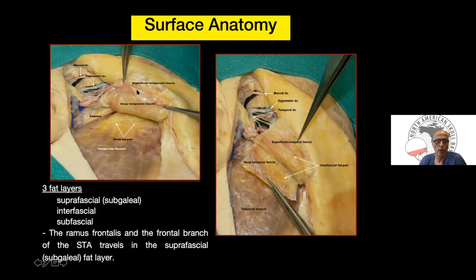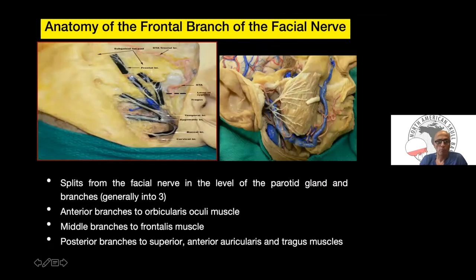There are two layers of temporalis fascia: superficial and deep. We like to see the fat pad when performing this dissection. There are not just one or two branches but multiple branches coming from the zygomatic or temporal branch of the facial nerve, and these branches are at risk when elevating this flap.